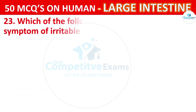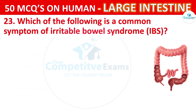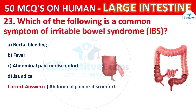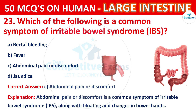Question 23. Which of the following is a common symptom of irritable bowel syndrome (IBS)? Your options are: Rectal bleeding, Fever, Abdominal pain or discomfort, or Jaundice. The correct answer is C, i.e. Abdominal pain or discomfort. Abdominal pain or discomfort is a common symptom of IBS, along with bloating and changes in bowel habits.